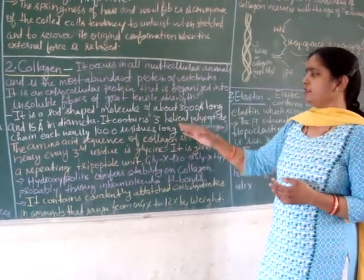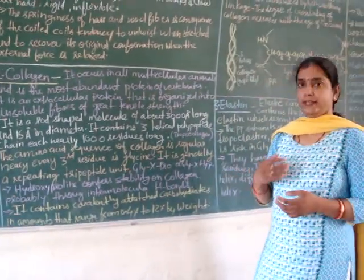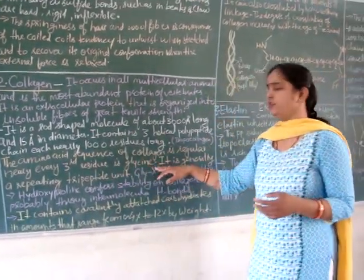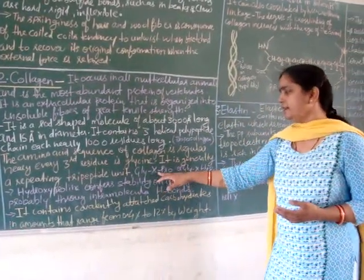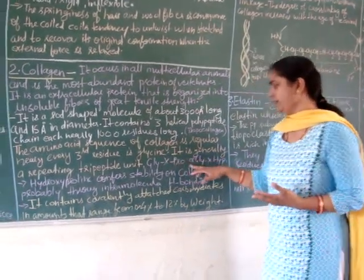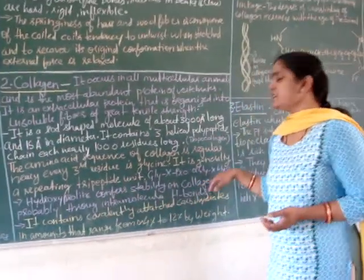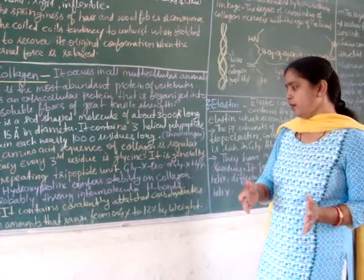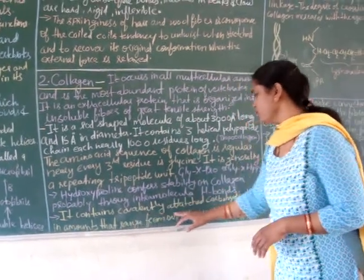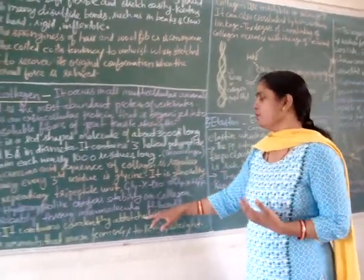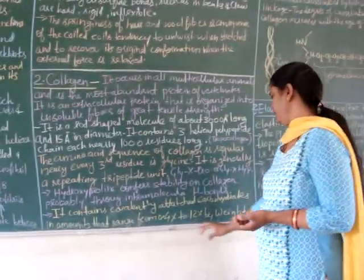The structural unit of collagen is known as tropocollagen. The amino acid sequence of collagen is very regular — nearly every third amino acid residue is glycine. It is generally a repeating tripeptide unit of glycine, followed by any amino acid and then proline, or glycine followed by hydroxyproline. Hydroxyproline confers stability on collagen, probably through intramolecular hydrogen bonds — that is, hydrogen bonds within the same collagen molecule. Collagen also contains covalently attached carbohydrate in amounts that range from 0.4% to 12% by weight.